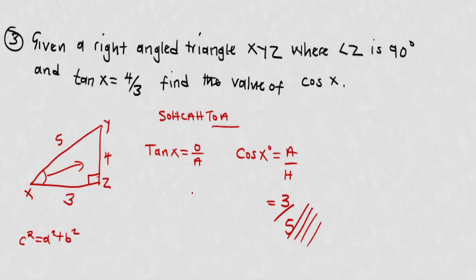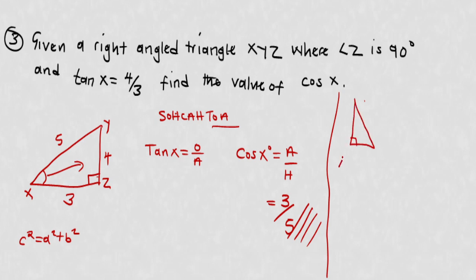That's basically how you handle questions on trigonometry. You also need to know how to find the area of a triangle — that will be very important in the exercises. For a right-angle triangle, area equals half base times height. But what if you have a triangle that is not right-angled?